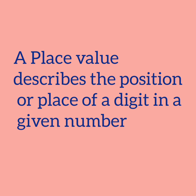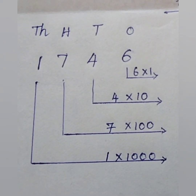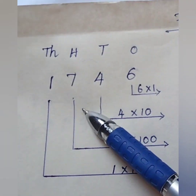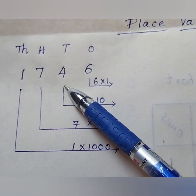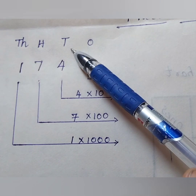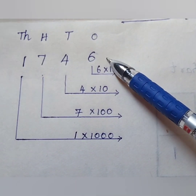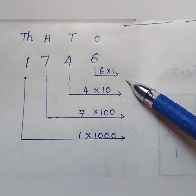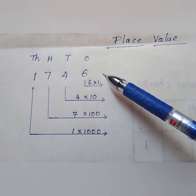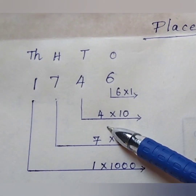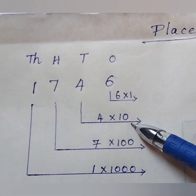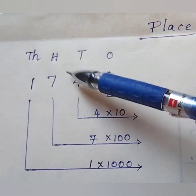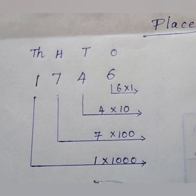Now let us see some examples. Our example is 1746. I have written the places for each digit. The place values are: 6 is in one's place so 6 into 1; 4 is in 10's place so 4 into 10; 7 is in 100's place so 7 into 100; and 1 is in 1000's place so 1 into 1000.